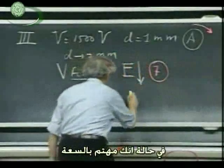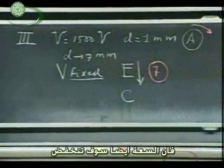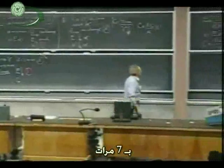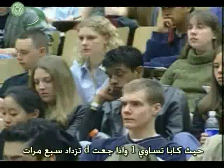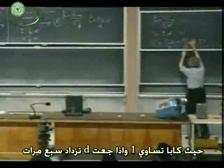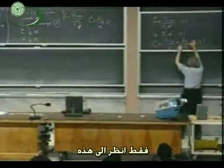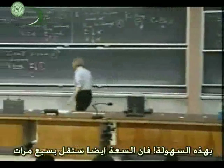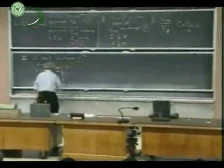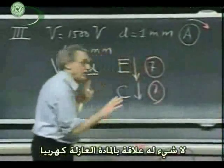In case you were interested in the capacitance, the capacitance will also go down by a factor of seven, because if you look at this equation, kappa is one. If I make D go up by a factor of seven, C goes down by a factor of seven. Just look at this. Simple as that. So C must also go down by a factor of seven. Nothing to do with dielectric. Nothing.